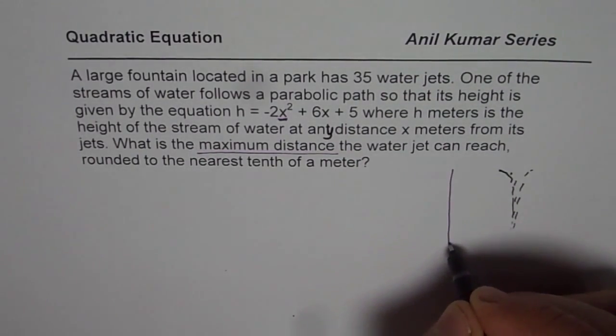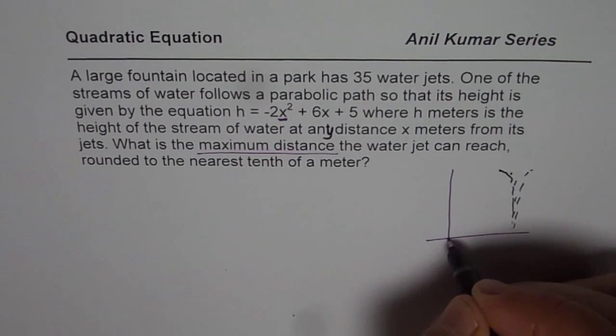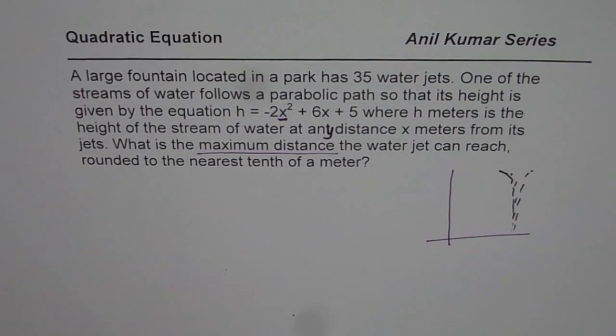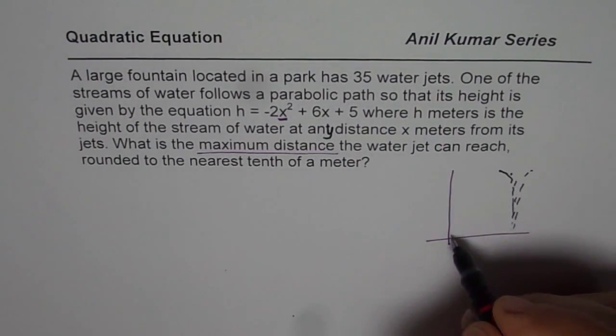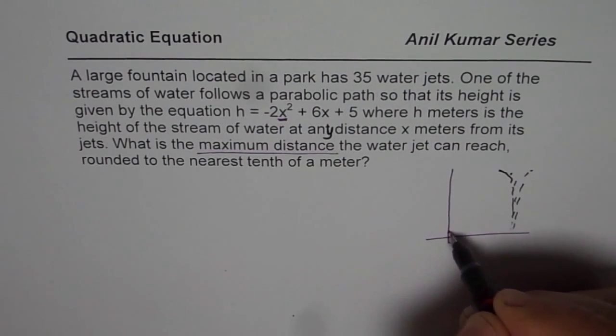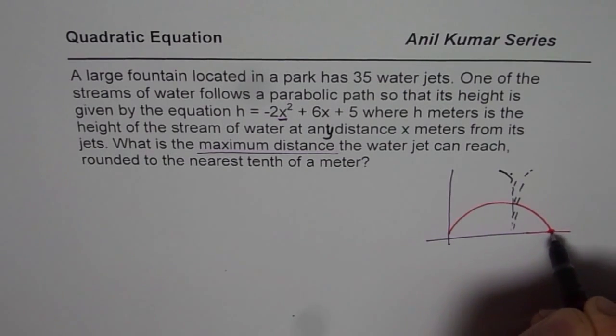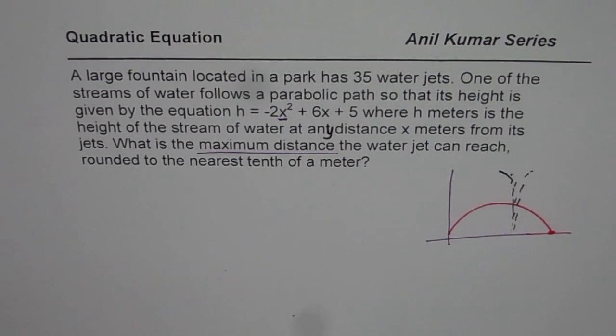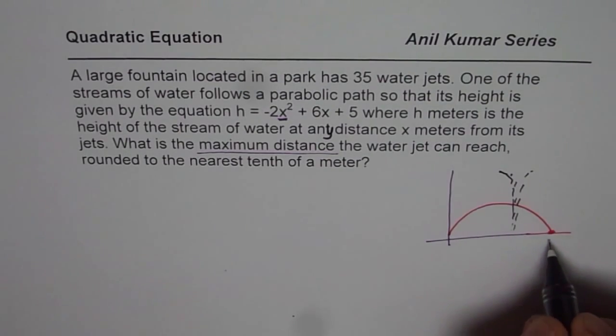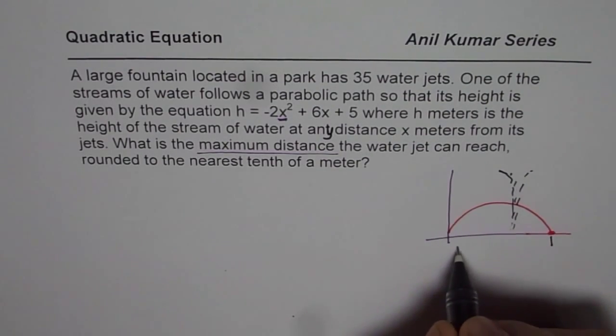So what we have here is let us say this is the fountain, right? So this fountain has a parabolic path. We will say it kind of starts from 5, so it is kind of like this. So that point where it hits the ground, where the height is again 0, is the maximum distance. This is the maximum distance we should be talking about, correct?